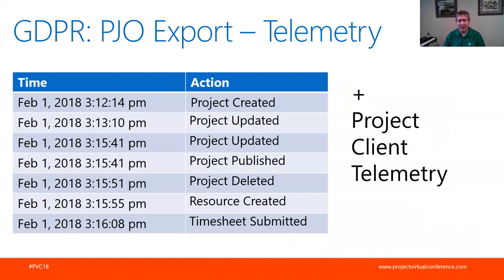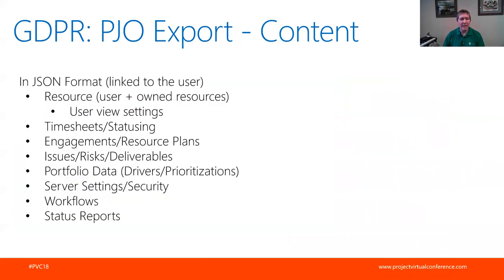For telemetry, you'd see things like actions of project created and updated - so you can see exactly what time certain things happened. There's also project client telemetry going on at the same time. The export of the content is mainly in JSON format linked to the user. There's information on the user, timesheets, statusing, engagements, resource plans, SharePoint data, portfolio data, server settings, workflows, and status reports. All of that information is output in JSON format.